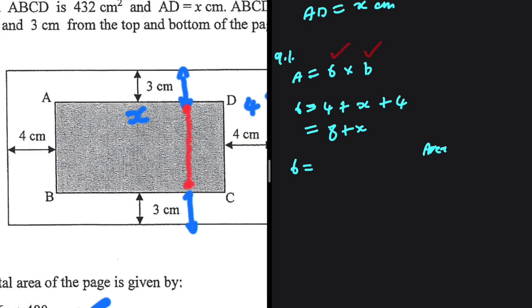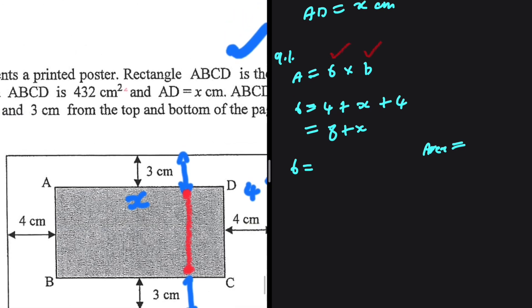We have the area of the shaded region, which is 432 cm². The formula for that area would be AD × DC = 432. But we know that AD is x, so DC = 432/x.